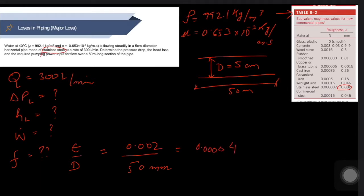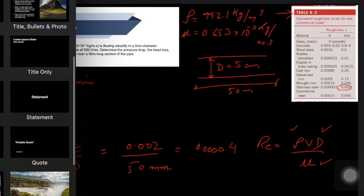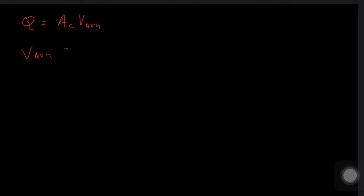Now we need to calculate the velocity. To determine whether the flow is laminar or turbulent, we calculate the Reynolds number: Re = ρVD/μ. We know density, diameter, and viscosity, but not velocity — so we use the flow rate formula to determine it. The flow rate Q equals the cross-sectional area multiplied by the average velocity.